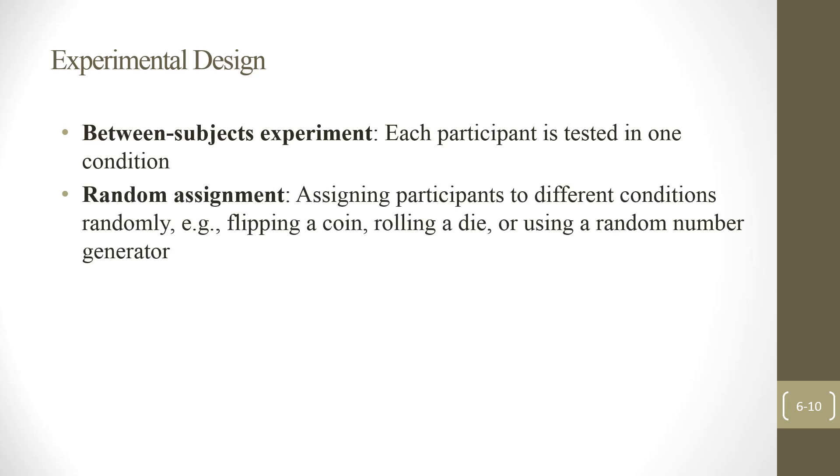If it is between, then we need to do random assignment. Assigning participants to different conditions randomly. How do you exactly do that? You can flip a coin, roll a die, or use a random number generator. Now, one thing I need to remind you is you need to understand the difference between random assignment and random sampling. What's the difference? Random assignment is when you have participants already and you want to divide them into two groups or three groups or whatever. That's when you use random assignment.